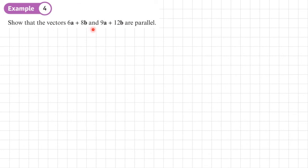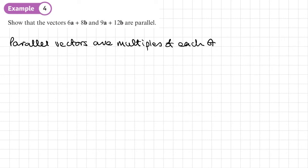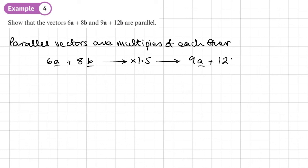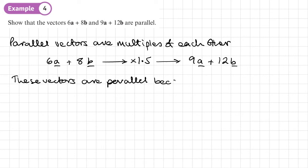Example four: show that the vectors 6a plus 8b and 9a plus 12b are parallel. Parallel vectors are multiples of each other. If we multiply 6a plus 8b by 1.5, we get 9a plus 12b. Therefore these vectors are parallel because 9a plus 12b equals 1.5 times (6a plus 8b).